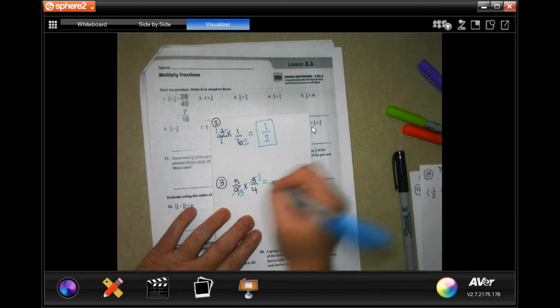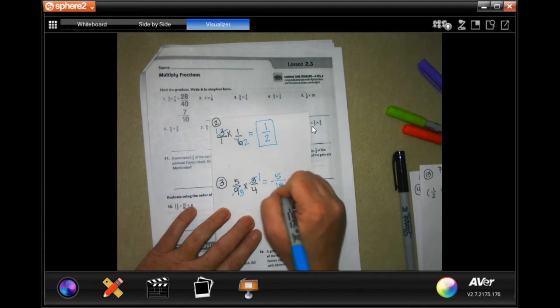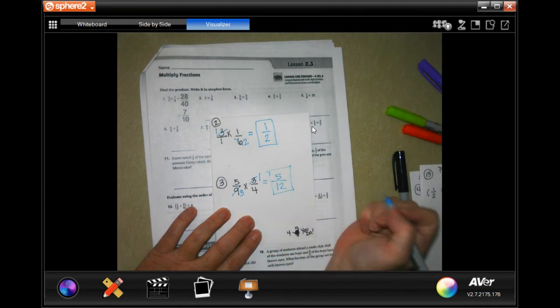So now I just have to multiply straight across, because 4 can't go into 5 evenly, 5 can't go into 4 evenly. Nothing goes in with 3 now. So 5 times 1 is 5, 3 times 4 is 12. Reduce, done.